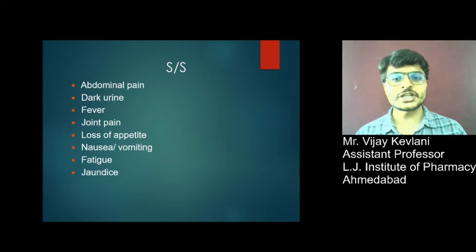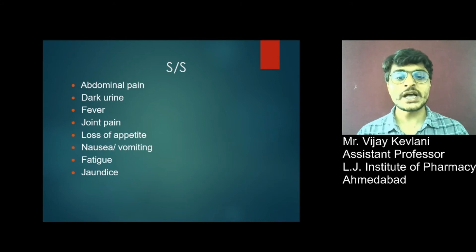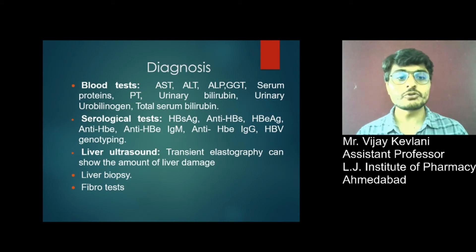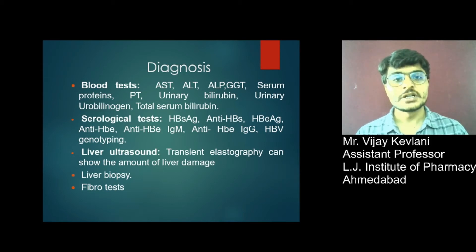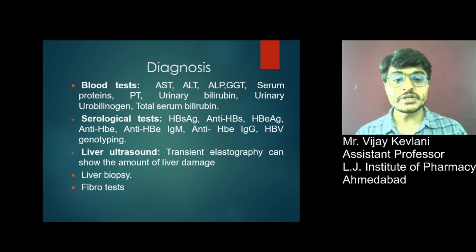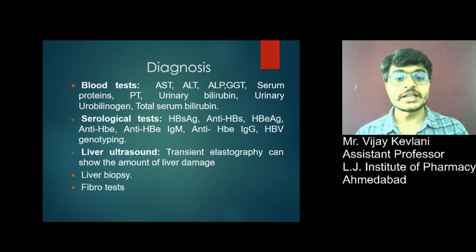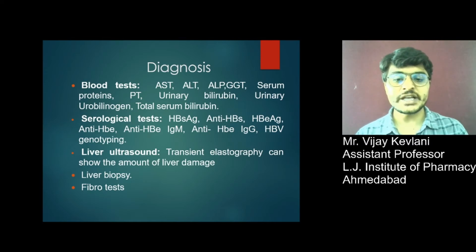Signs and symptoms of Hepatitis B include abdominal pain, dark urine, fever, joint pain, loss of appetite, nausea or vomiting, fatigue, and jaundice. Diagnosis is by blood test measuring AST, ALT, ALP, GGT, serum protein, prothrombin time, urine bilirubin, urinary urobilinogen, and total serum bilirubin. Serological testing includes surface antigen, anti-HBs, HBe antigen, anti-HBe, Immunoglobulin M, Immunoglobulin G, and Hepatitis B virus genotype. Liver ultrasound, transient elastography to show the amount of liver damage, liver biopsy, and fibroscan are also used.